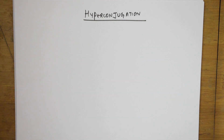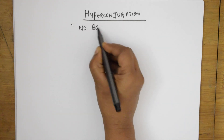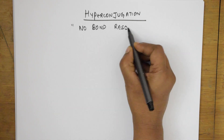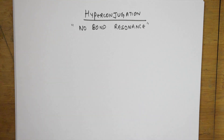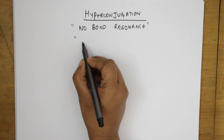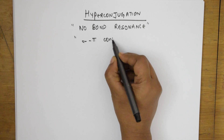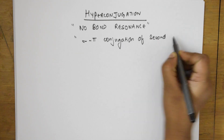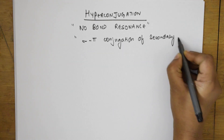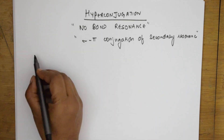Hyperconjugation is also called no bond resonance. If your teacher asks you in the exam and doesn't use the term hyperconjugation, no bond resonance is the same thing. It is also called sigma-pi conjugation or secondary resonance.